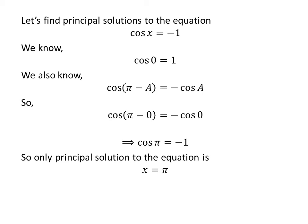There is only one principal solution to the equation cosine of x is equal to minus 1, which is π.